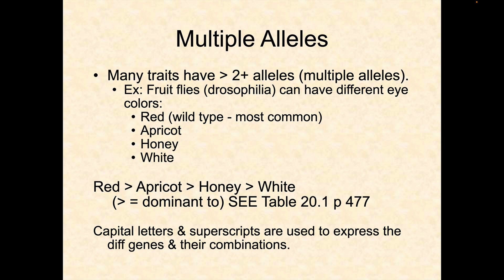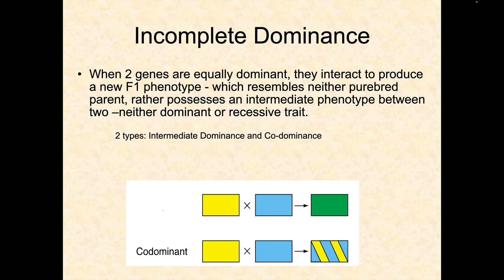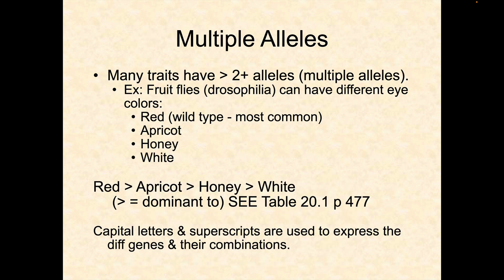There's a hierarchy of dominance: red is dominant to apricot, which is dominant to honey, which is dominant to white. Capital letters and superscripts are used to express these different genes and their combinations. This would be considered polygenic if there's more than one set of alleles connected to one trait.